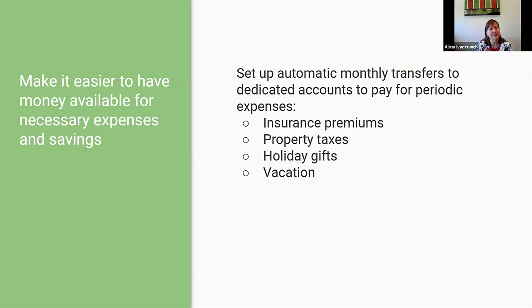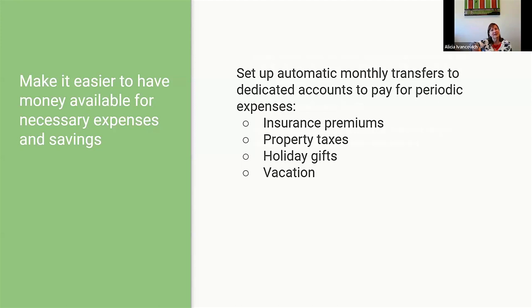Think about it — that $600 is just $100 a month. If you set up an automatic transfer every month from your checking account to a dedicated savings account — your car insurance savings account — you've got $100 a month going in, and when the bill comes every six months, you've accumulated the $600 to pay it.